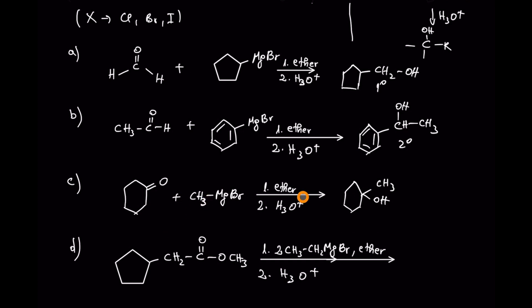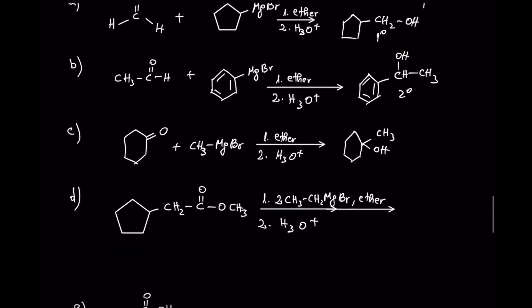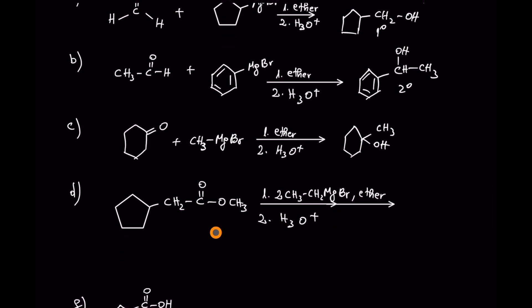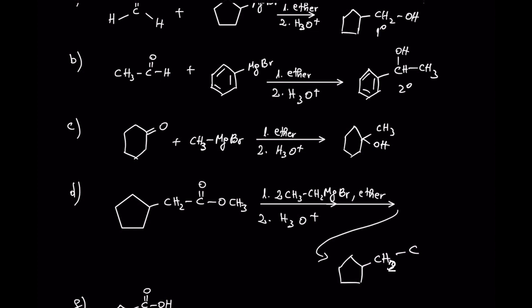In this case the product is going to be 1-methylcyclohexanol. With esters you are also going to form tertiary alcohols, but you have to keep in mind that you need two equivalents of Grignard reagent. The final product inherits a carbon with one CH2CH3 and two CH2CH3 groups that come from the Grignard reagent and the alcohol.